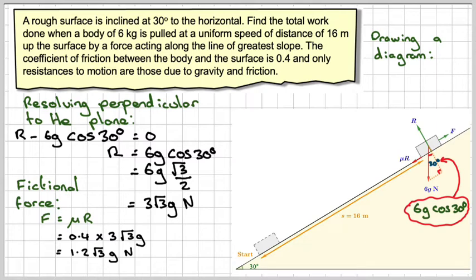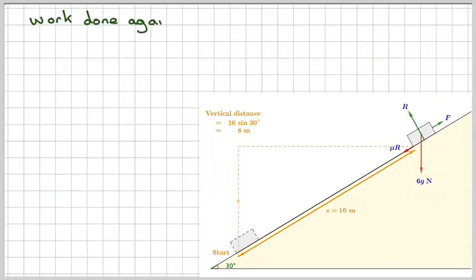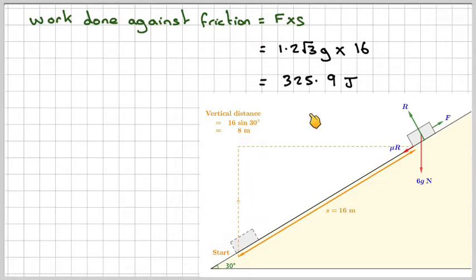So that force is needed to move that body through a distance of 16 meters. So the work done against friction is going to be 1.2 root 3g times 16 meters and that gives me 325.9 joules.